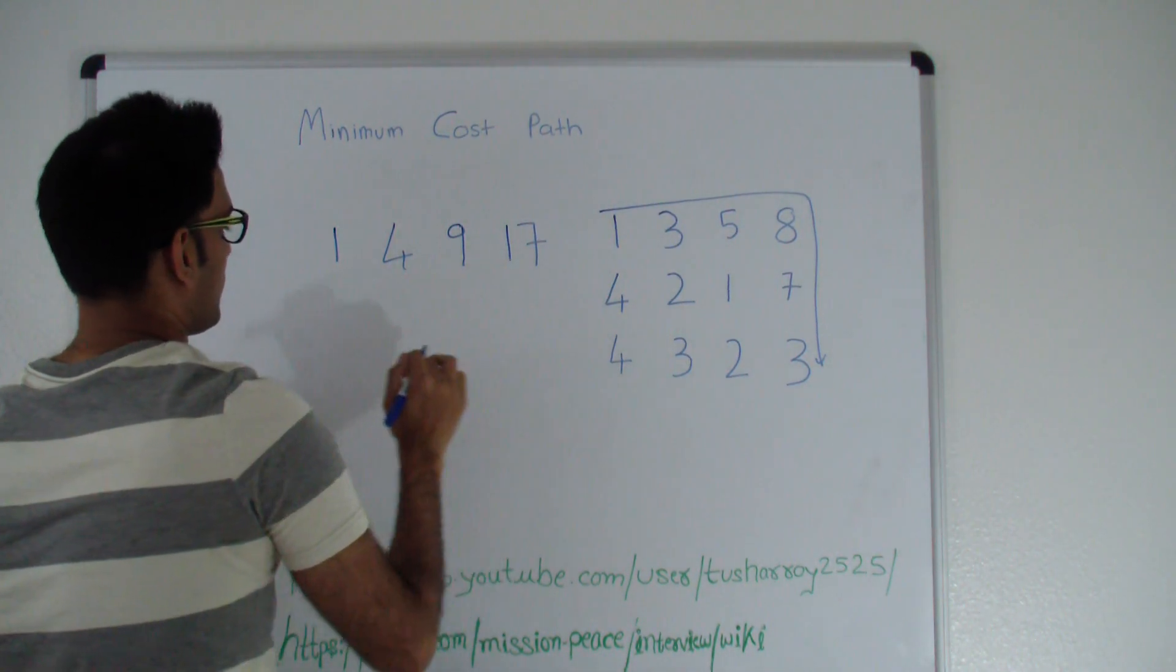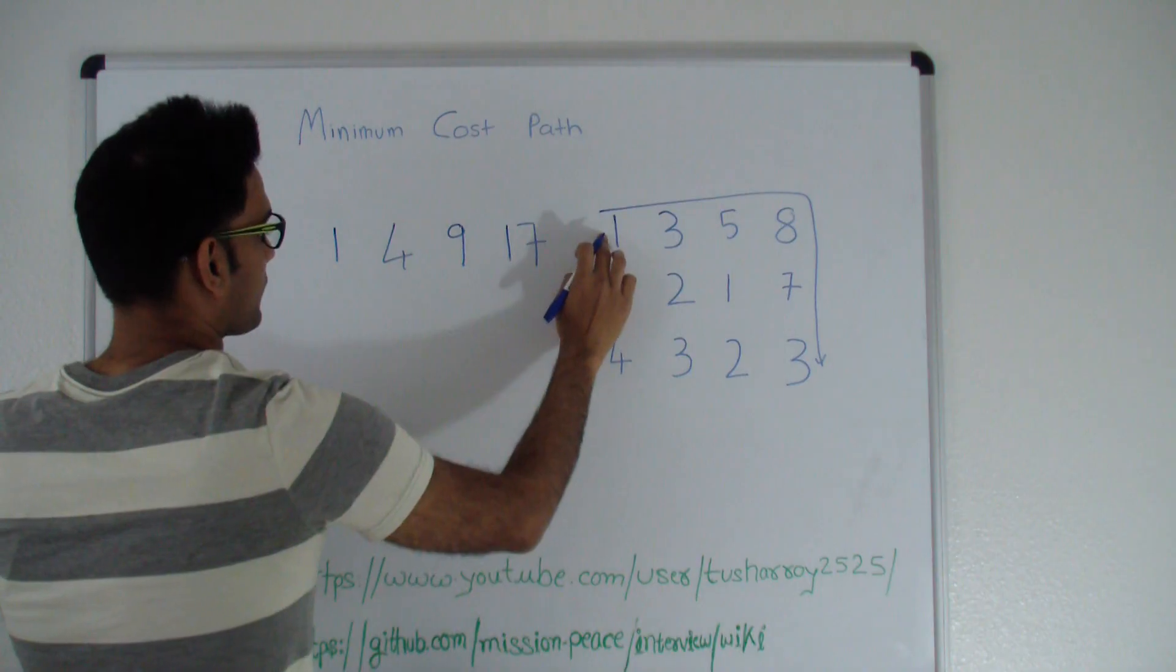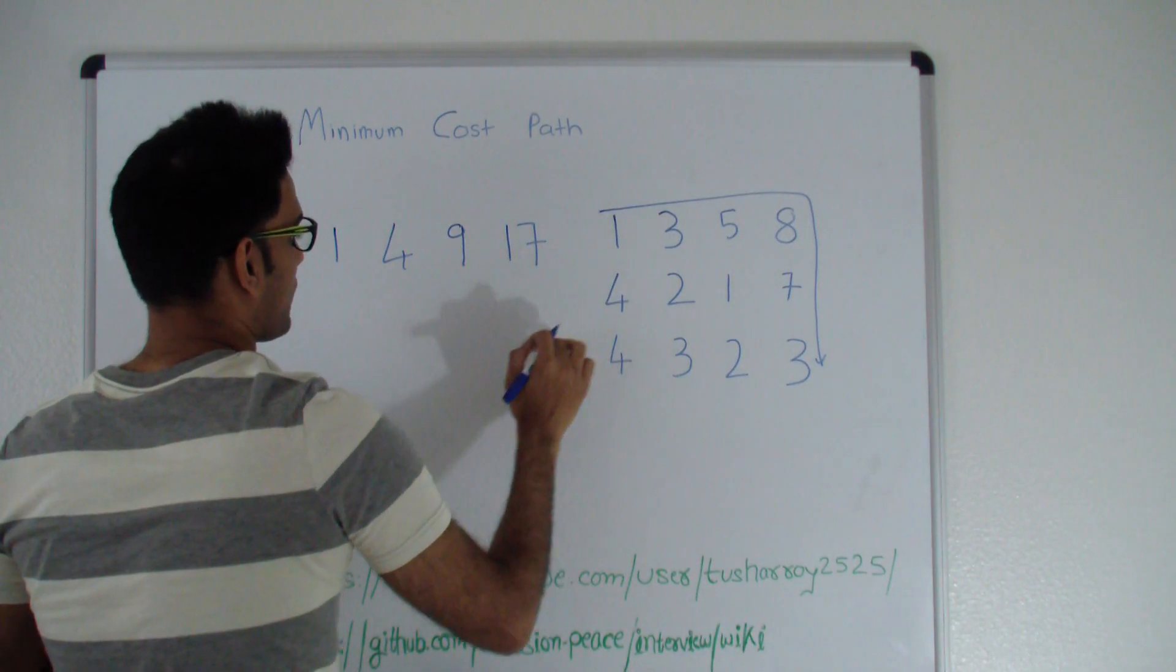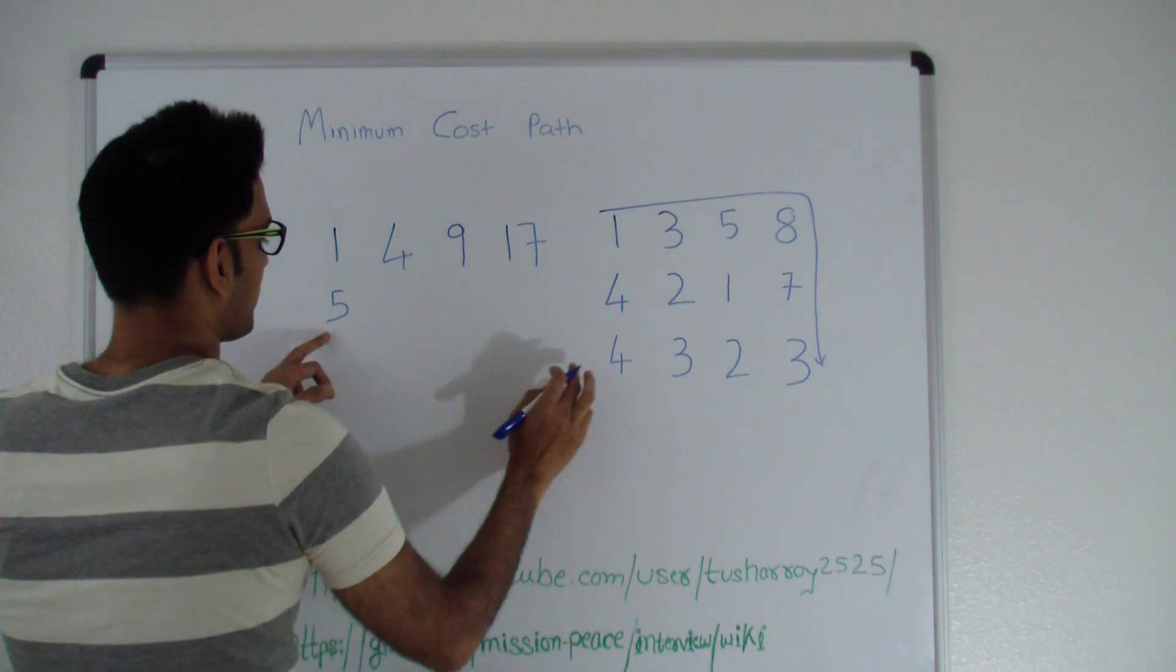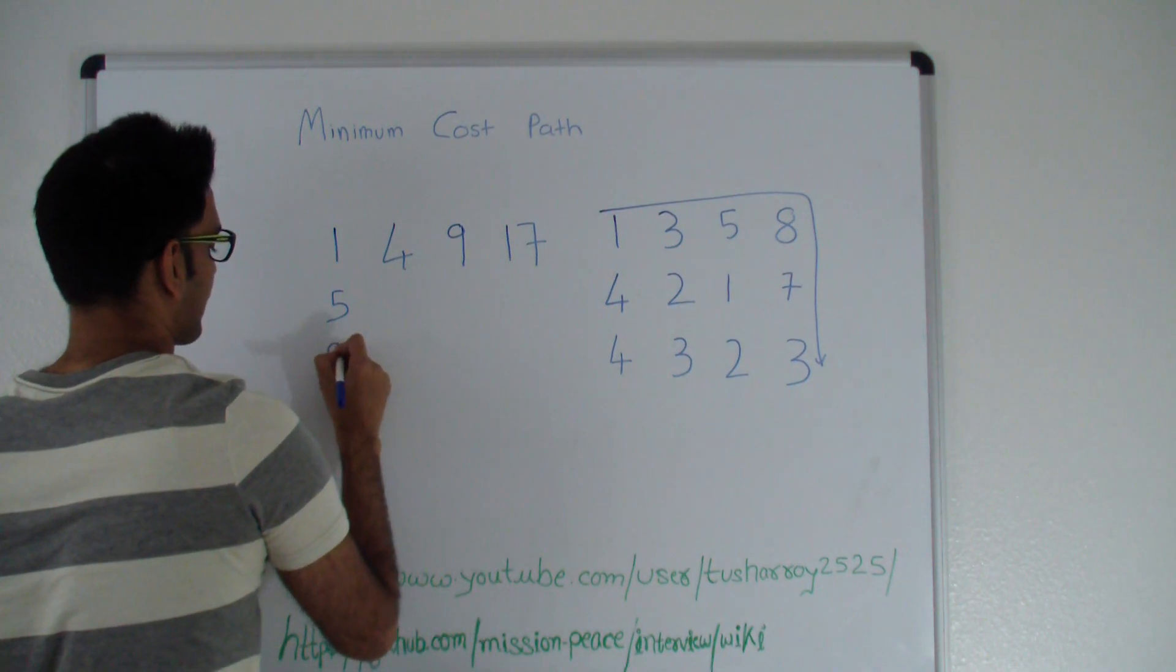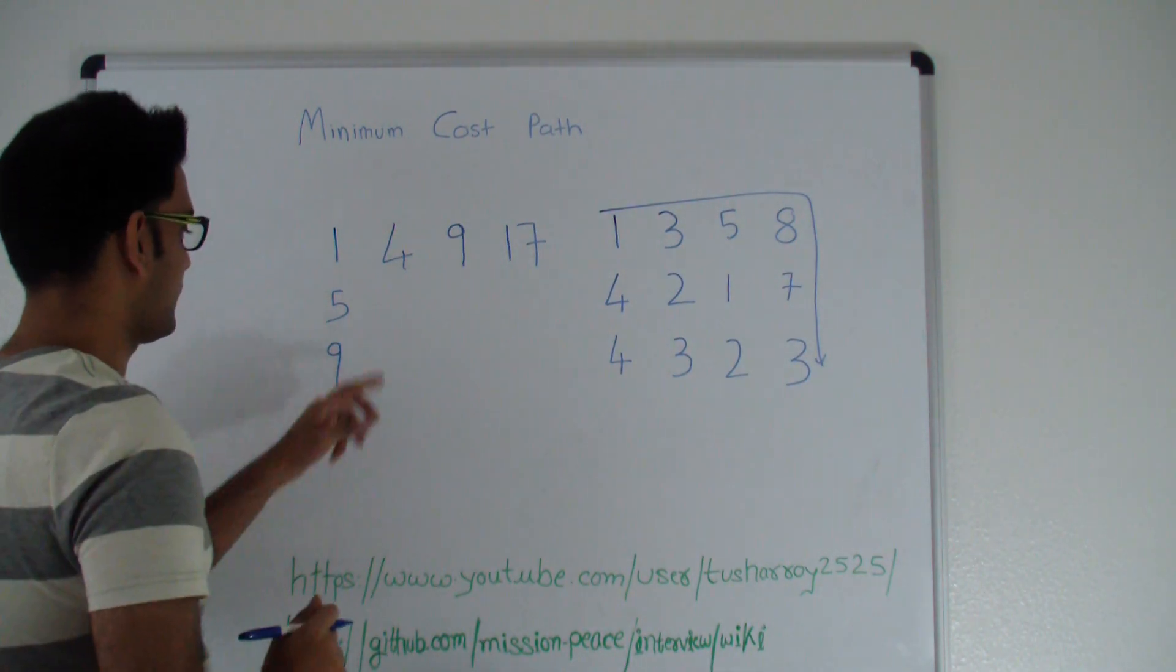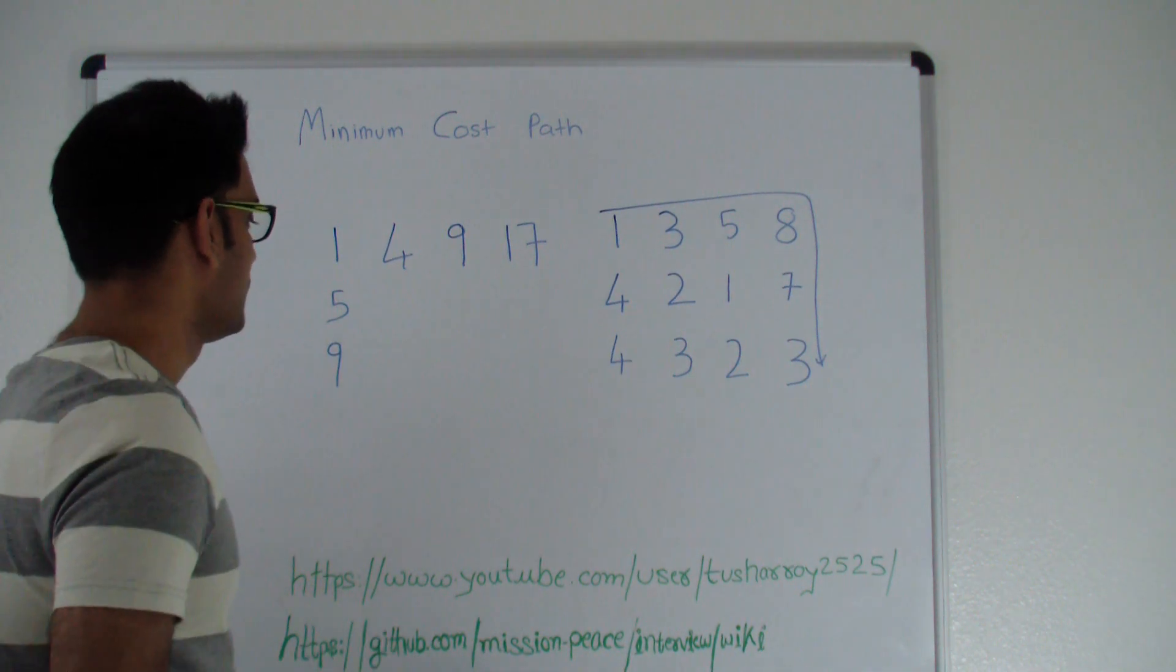Let's check going down. To reach this point, there's only one path which is going down and the cost will be 5. To reach this point the cost will be 5 plus 4, which is 9. Let's try to fill up the rest of the rows and columns.